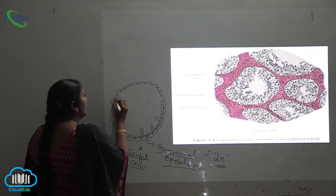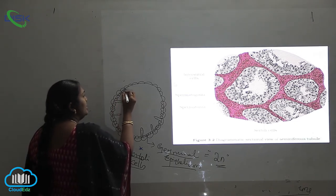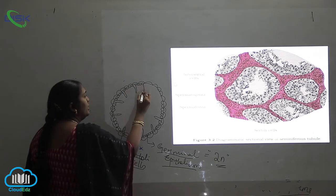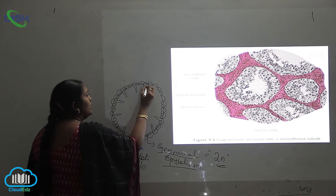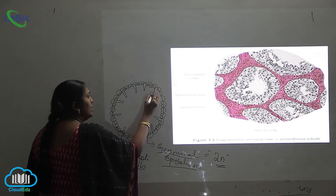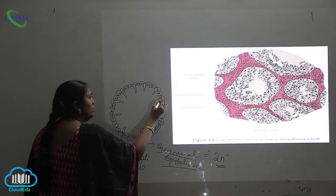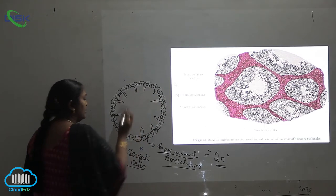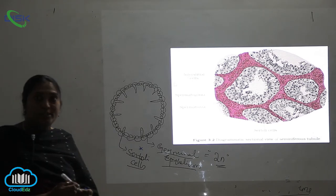Now you may ask then what is the importance of these small cells? They form the accessory glands. The other cells will form the accessory glands. So the Sertoli cells are very very important in the production of the testis.